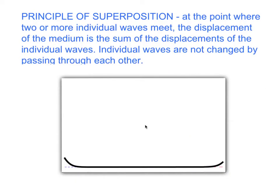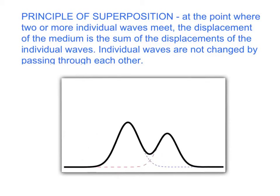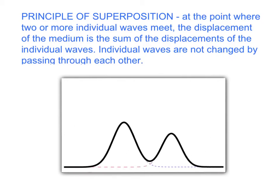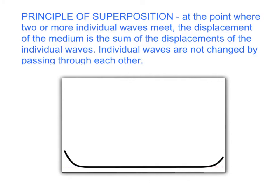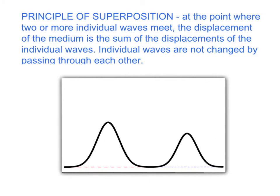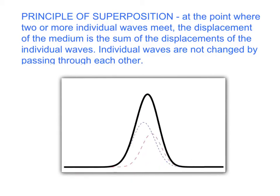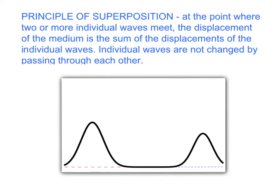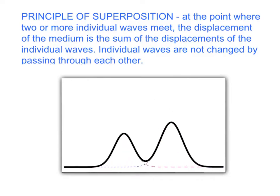What we've seen is an example of the principle of superposition, which says: at the point where two or more individual waves meet, the displacement of the medium is the sum of the displacements of the individual waves. You can see right here this is the displacement of the medium, and it is the sum of these two waves added together. We've also seen that the individual waves are not changed at all by passing through each other.